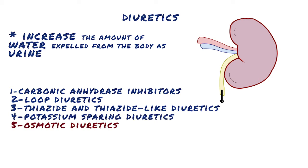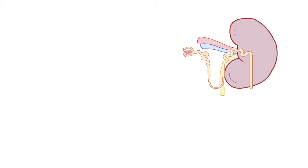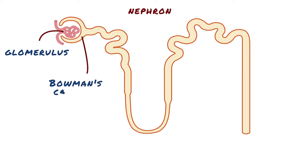In this video, we are going to talk about osmotic diuretics. The basic unit of the kidney is called a nephron. It is composed of a renal corpuscle and a renal tubule. The renal corpuscle consists of a tuft of capillaries called a glomerulus, and an encompassing Bowman's capsule.